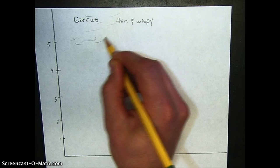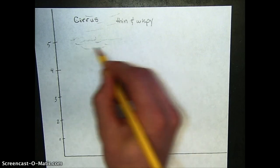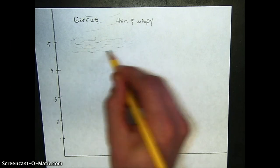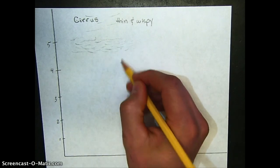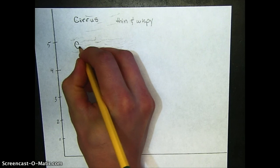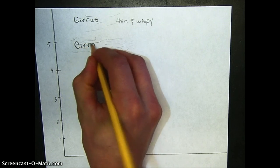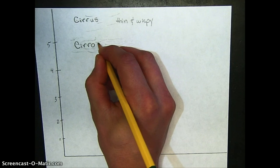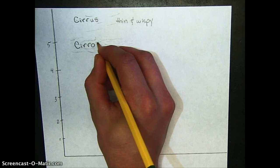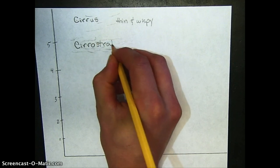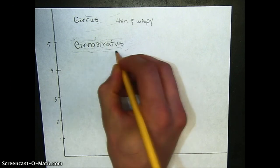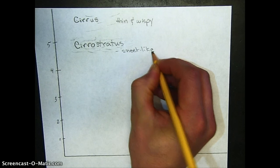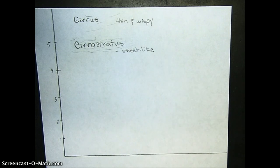Another type of cirrus cloud, this is much more sheet-like. This is called cirrostratus, using the prefix, Latin prefix cirro meaning high. Cirrostratus, these are sheet-like, look like a puffy little sheet pulled across the sky.